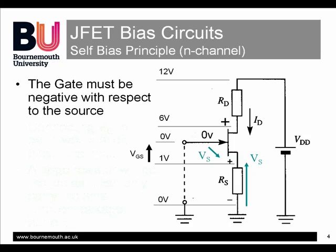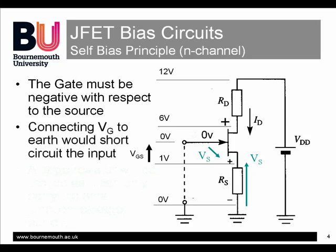However, it is not possible to directly connect the earth to the gate, as this would short out the signal we want to amplify. But we can achieve the same effect by connecting a very large resistor between the gate and the ground, say around 1 megaohm. The only DC current that can flow through this resistor is the leakage current from the PN gate-to-source junction.